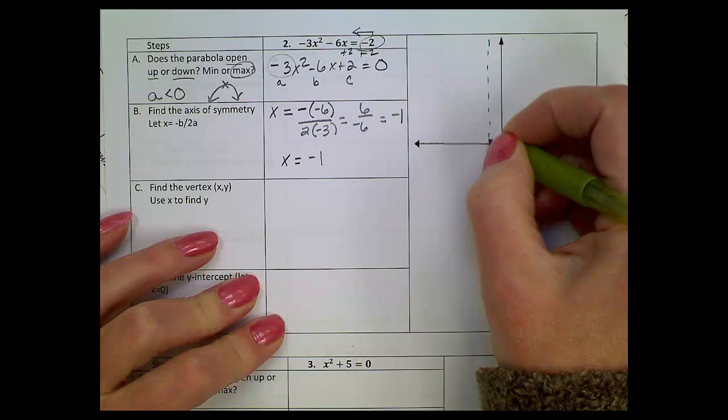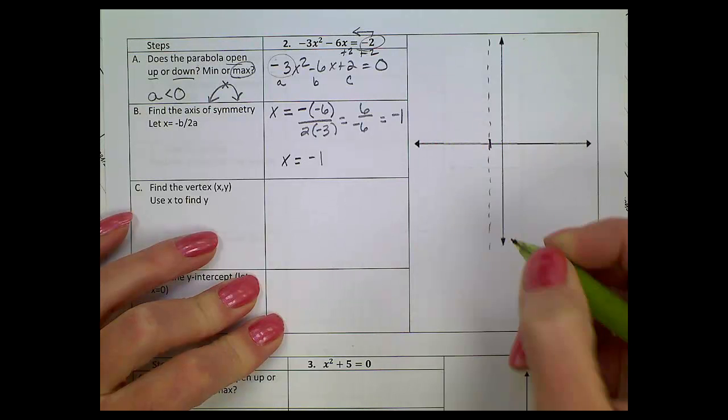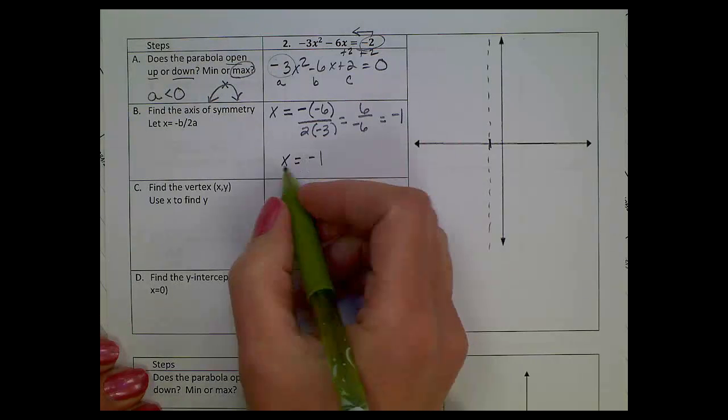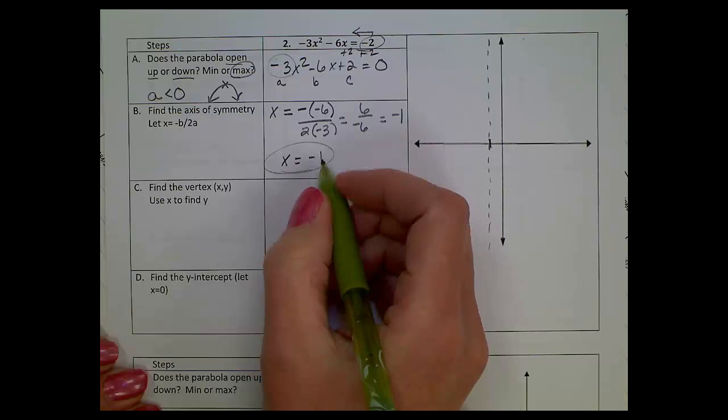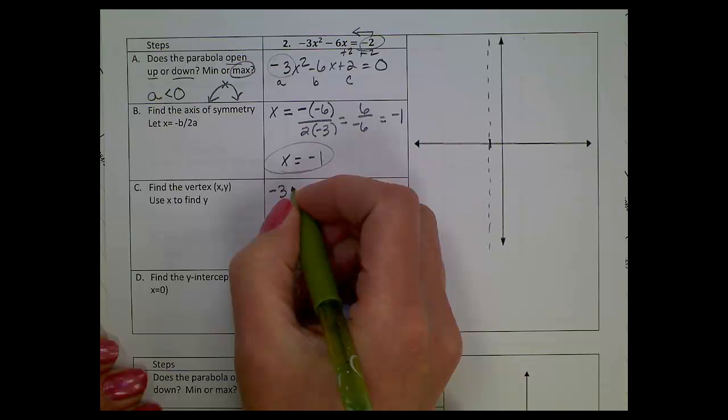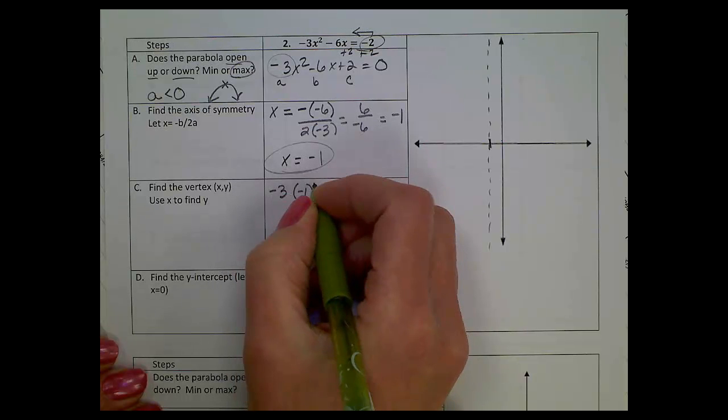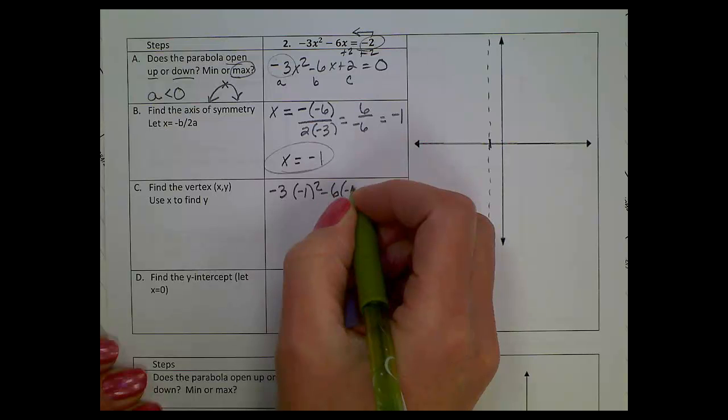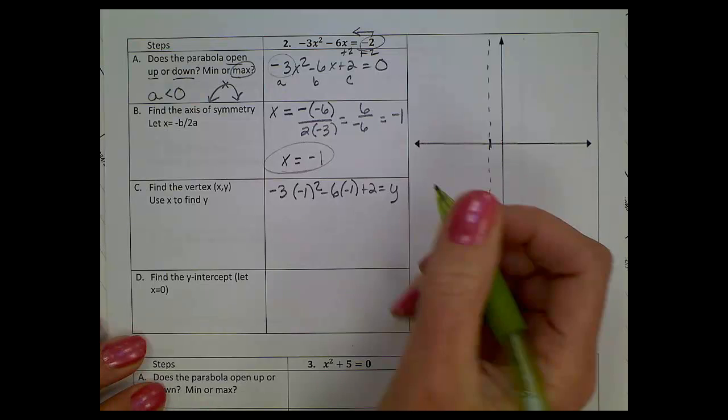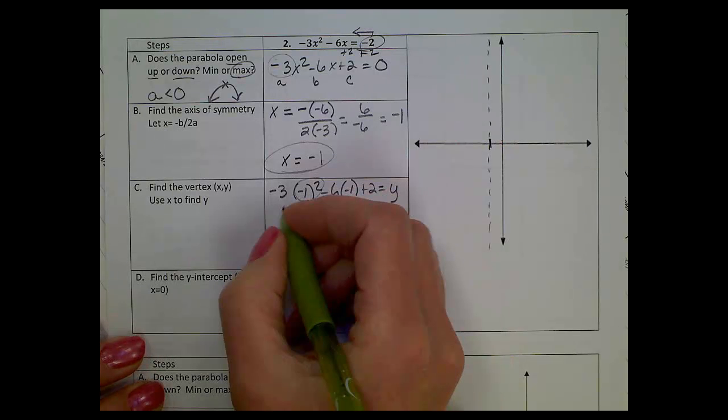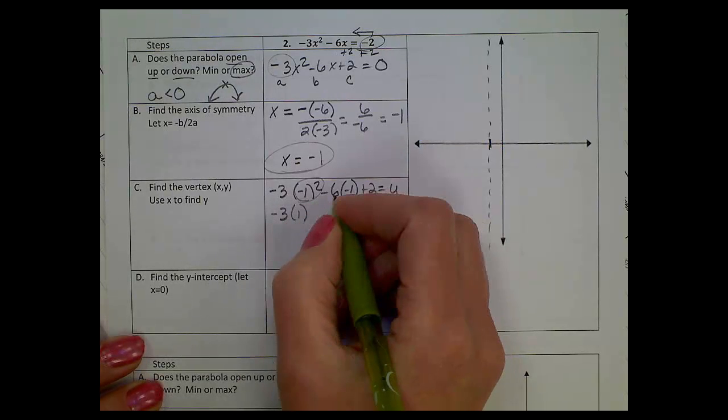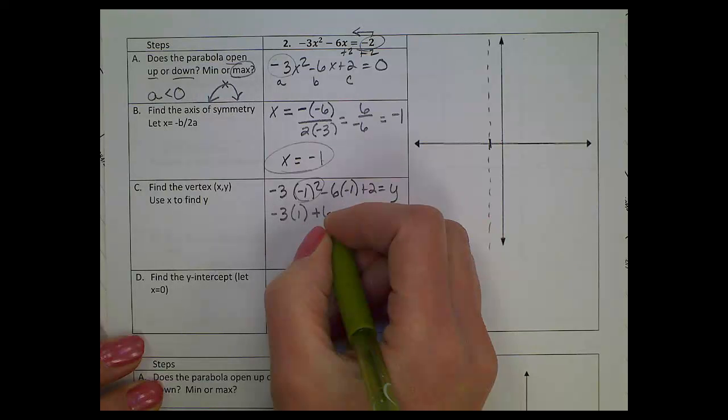Remember, this is an imaginary line, so it's dotted. It's not part of the parabola itself, it just helps us graph the parabola. Now we're going to try to find the vertex. We use this: let x = -1, then solve that equation for y. We're going to do a quick setup: -3(-1)² - 6(-1) + 2. Instead of equal zero, we're going to let it equal y.